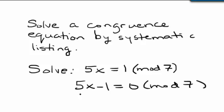Or in other words, this means since congruence to 0 in mod 7 means that the number is divisible by 7, this means that 5x minus 1 is a multiple of 7.